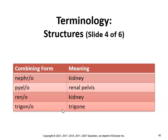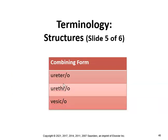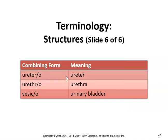Ureter and urethr are combining forms relating to vessels. Ureterocele is a hernia of the ureter, and ureterolithotomy is incision of the ureter to remove a stone. Ureteroileostomy is a new opening between the ureter and the ileum. Urethritis is inflammation of the urethra.